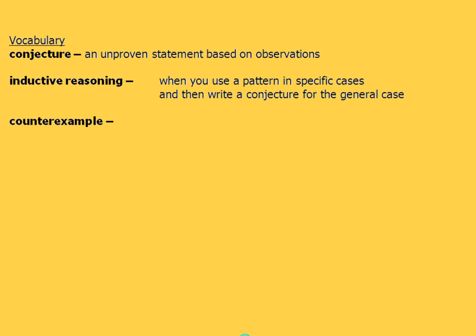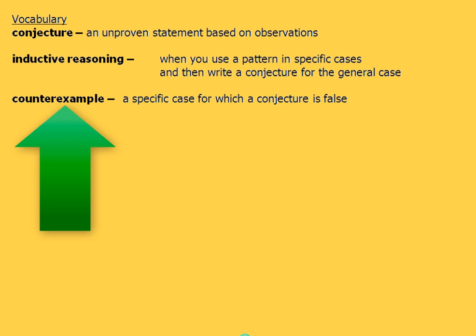And our third and final word is going to be counterexample. And we've already taken a look at some of these. But a counterexample is a specific case for which a conjecture is false. And then we'll take a look at several of these in our notes as well. So those are our three vocabulary words that we're going to be using throughout the beginning of chapter 2 here.